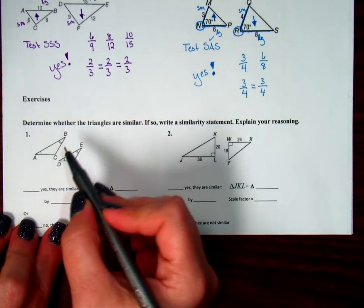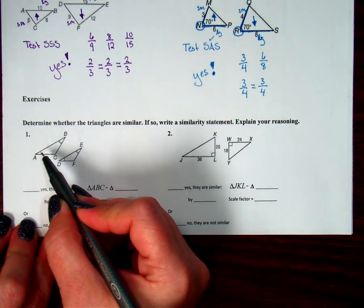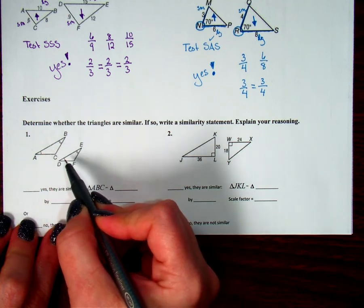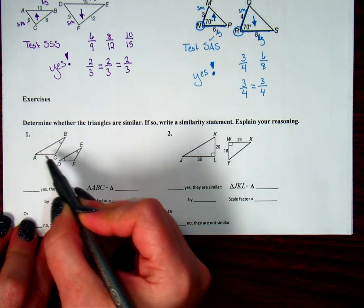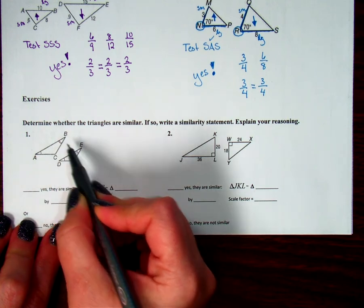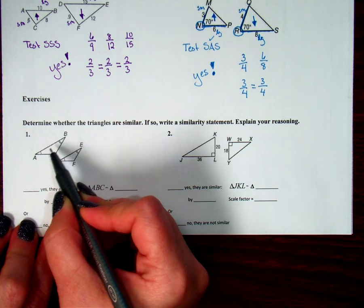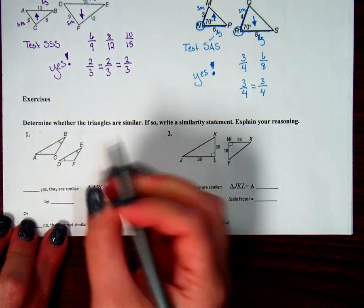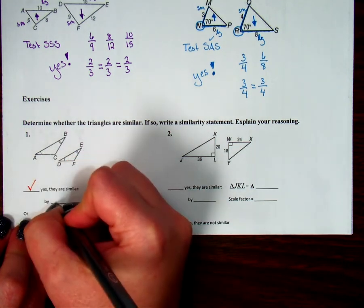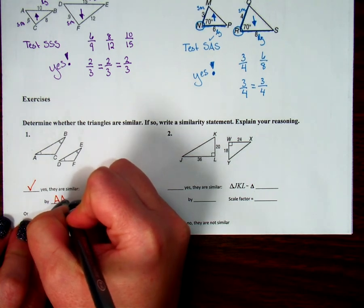On this first one, I can see I have an angle marked that matches an angle here. So I've got two congruent angles that go together. And then here's another pair of congruent angles that go together. So there's two sets of congruent angles. So I can say yes by angle-angle similarity.